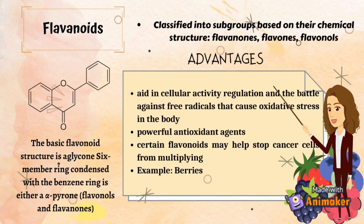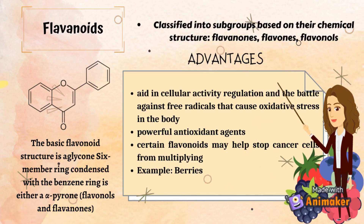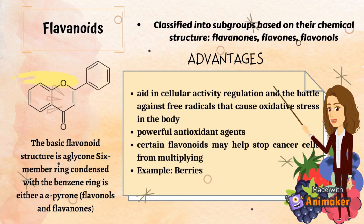Another type of phenolic compounds is flavonoids. It is classified into subgroups based on their chemical structure. It also has many advantages such as aiding in cellular activity regulation and the battle against free radicals that cause oxidative stress in the body. Certain flavonoids may also help to stop cancer cells from multiplying. For example, flavonoids are most abundant in various kinds of berries.